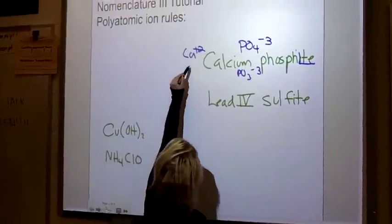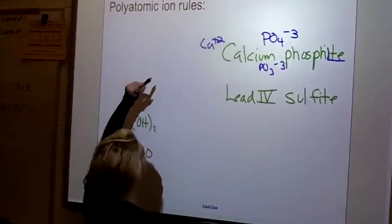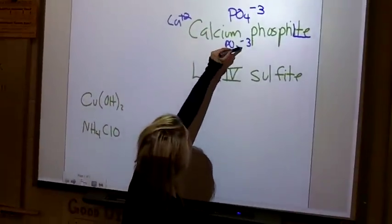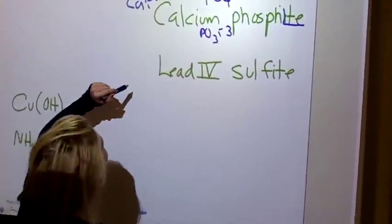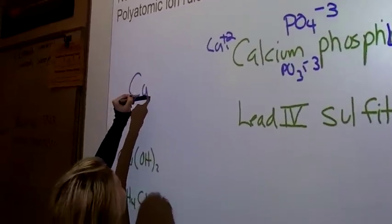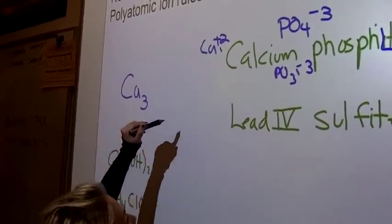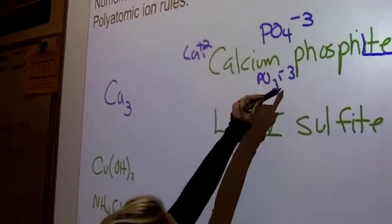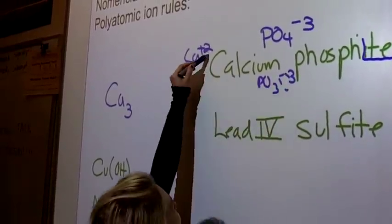You have two calciums, but you need to cancel these charges out. It has to equal 6. So it would be calcium 3, and then you have to have two of these because it has to equal 6 to cross out.